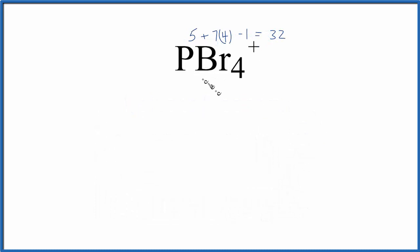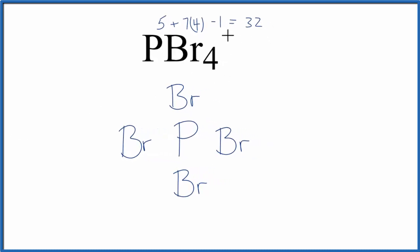Phosphorus, that's the least electronegative, so we're going to put that right at the center, and then we'll put bromines around it. We have 32 total valence electrons, so we're going to put electrons between the atoms, and that'll form the chemical bonds.